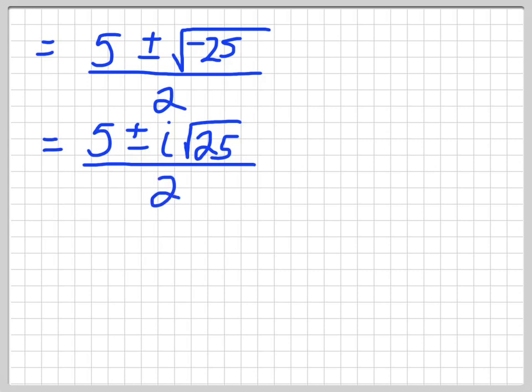Divide it by 2, and then we can just simply take the square root of 25, which is 5. So 5i divided by 2.